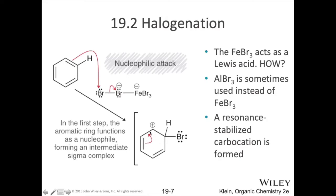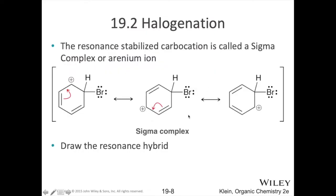In doing so, it makes what we call a sigma complex. We have a positive charge — a carbocation — and it's going to be resonance-stabilized by that ring. We have this double bond moving over here, which shifts the positive charge, and that positive charge can shift around the ring accordingly. So even though we have a carbocation here, it is resonance-stabilized, and so this sigma complex is a pretty stable intermediate. A quick note: we can also use aluminium bromide instead of iron bromide.